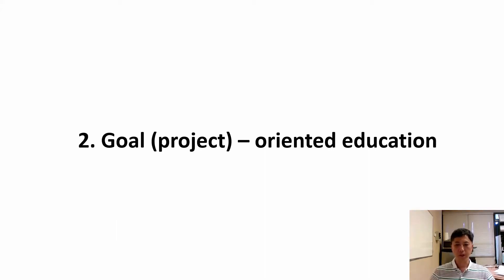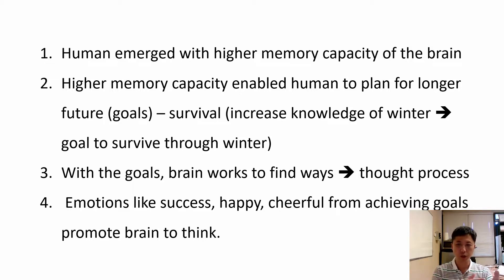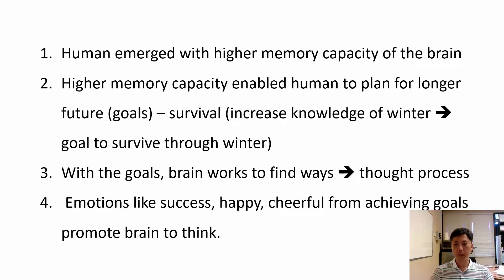Goal-oriented education — what it is. Because of human brain capacity, we have increased memory. So basically you remember more and can plan longer. For example, last year's severe winter gives you knowledge so that this year you can plan for the coming winter — finding shelter or blankets. With increased memory capacity, the brain can predict further into the future, and goals are automatically set.